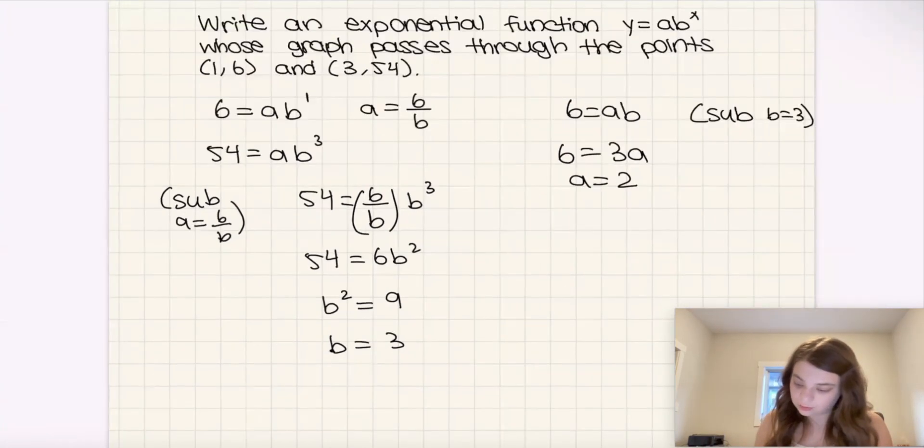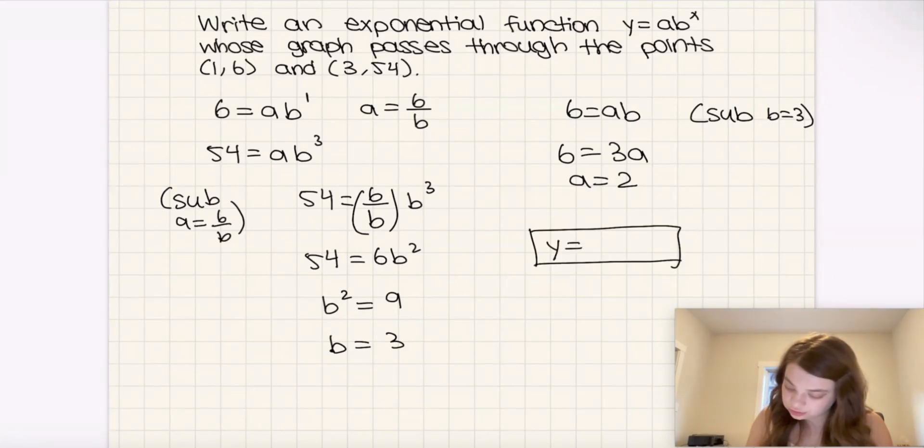And so therefore, the final equation in y equals abx form is y is equal to 2 times 3 to the power of x. And that right there that's boxed in, that is our final answer for the equation.